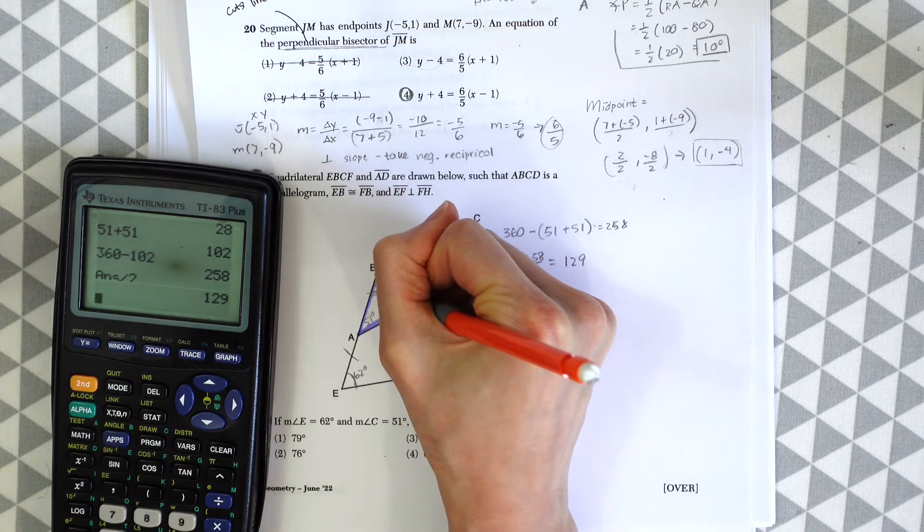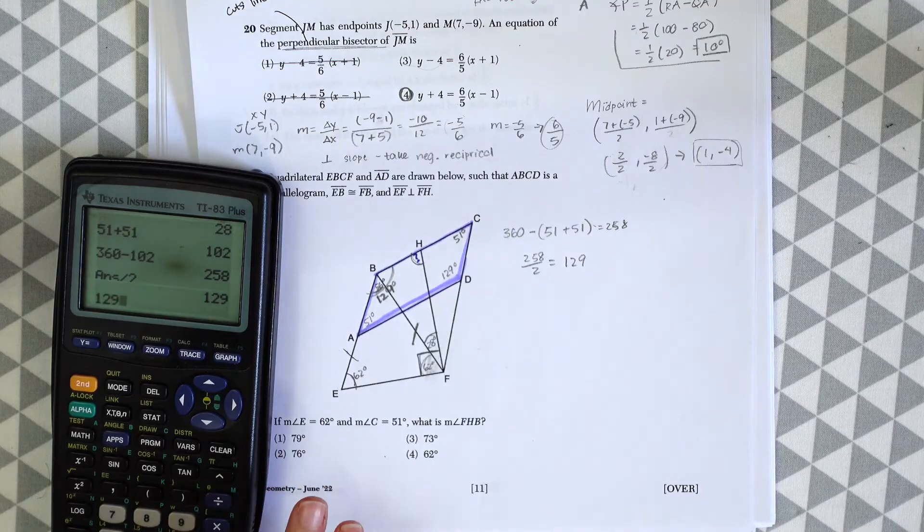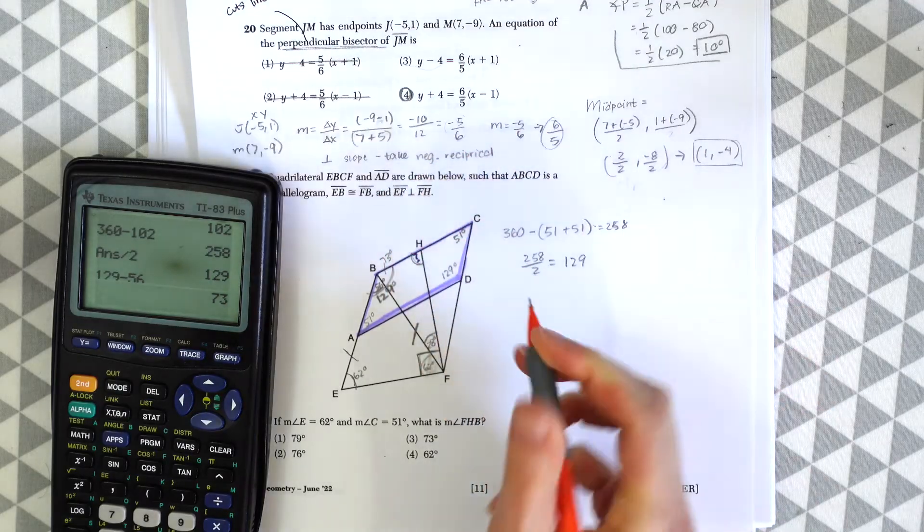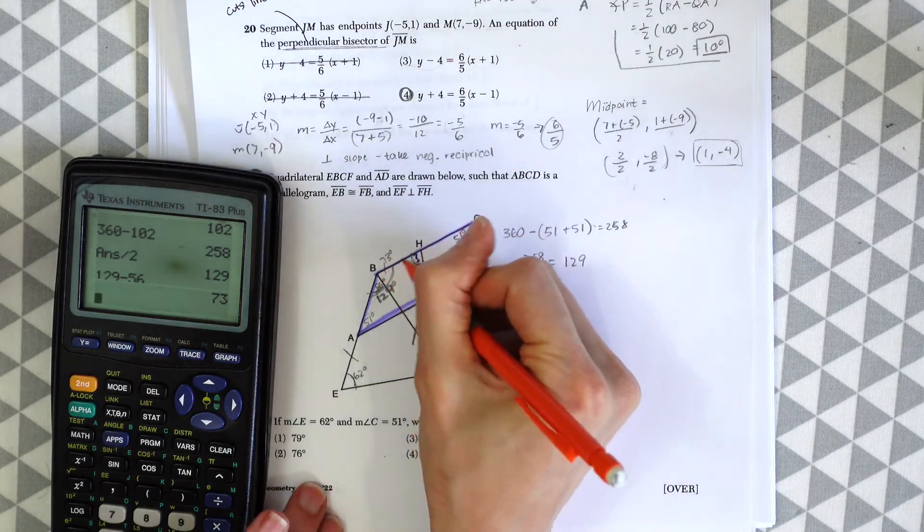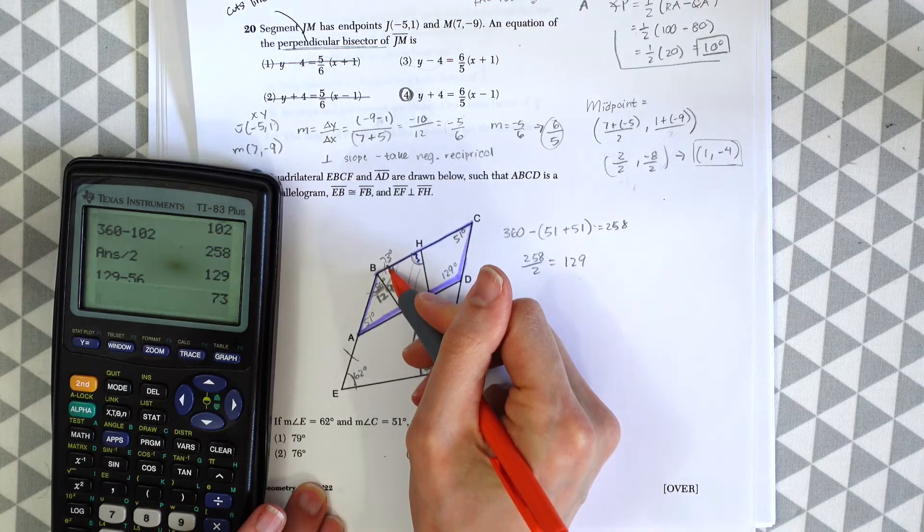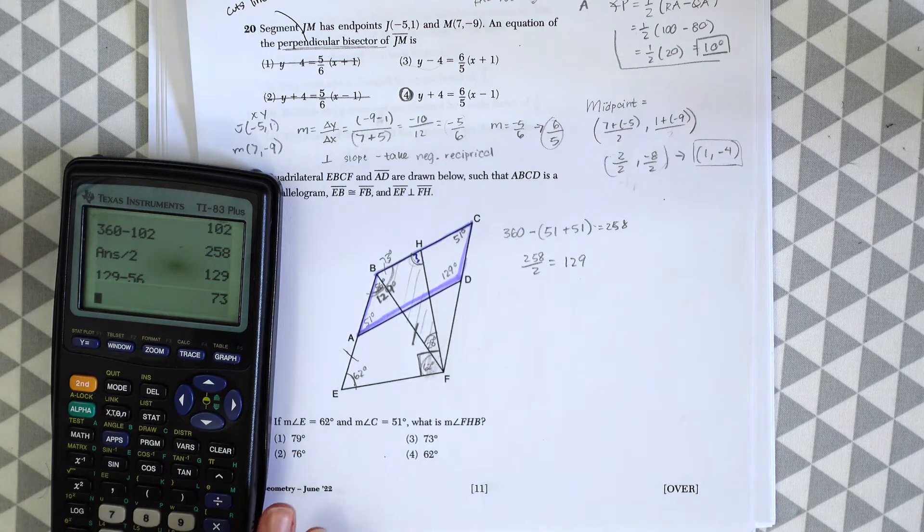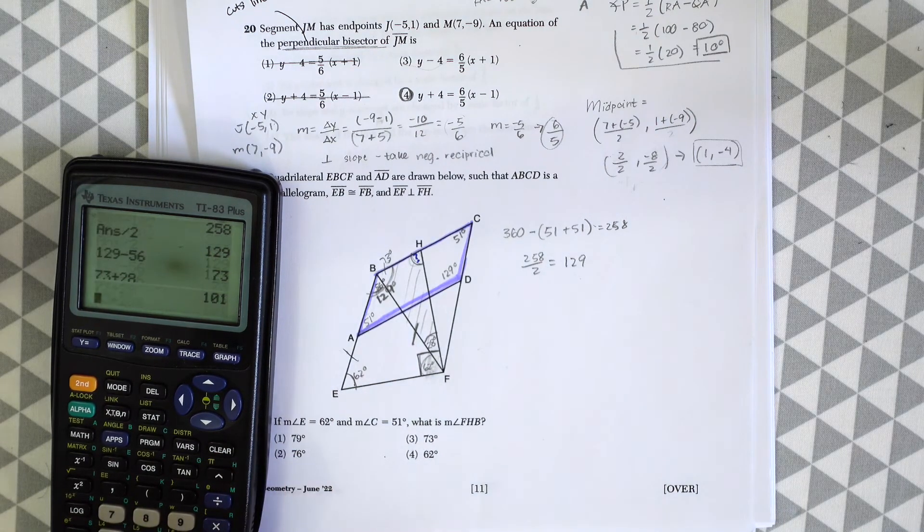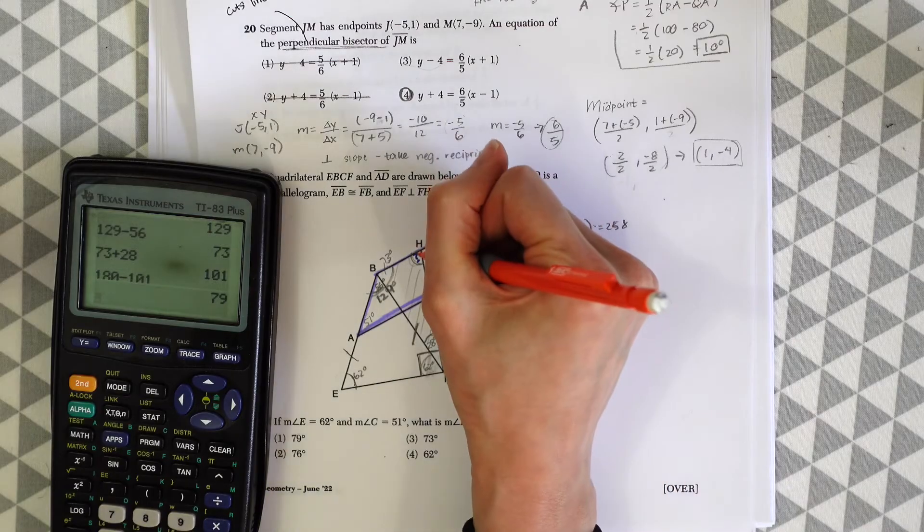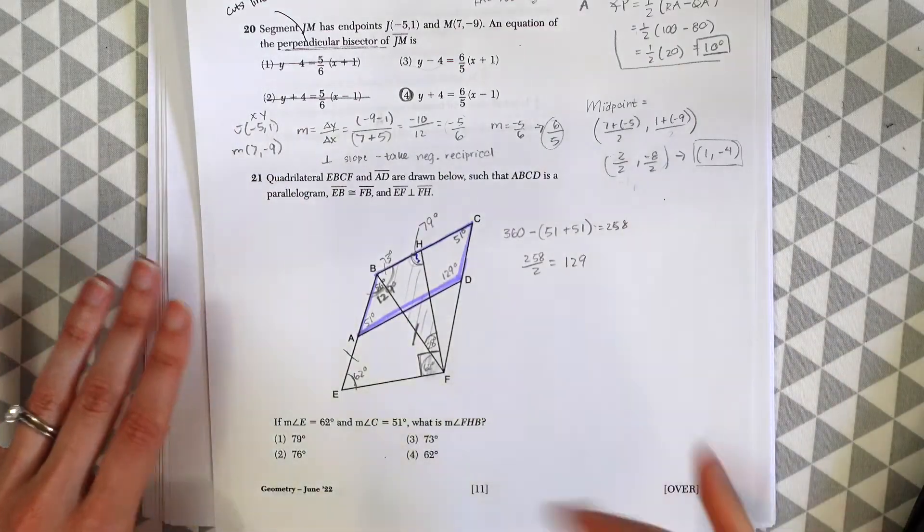Knowing the entire angle is 129 and this little area is 56, we subtract 56 from 129 to get 73 degrees. Focusing on the center triangle, we have an angle of 73 degrees, an angle of 28 degrees, and the angle we're trying to find. 73 plus 28 equals 101, and 180 minus 101 equals 79 degrees, which is choice one.